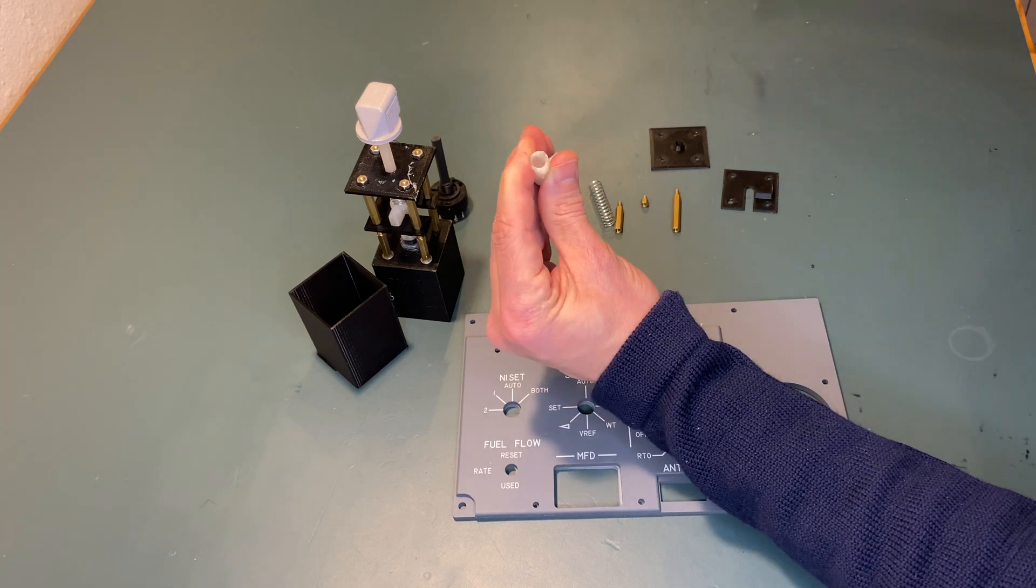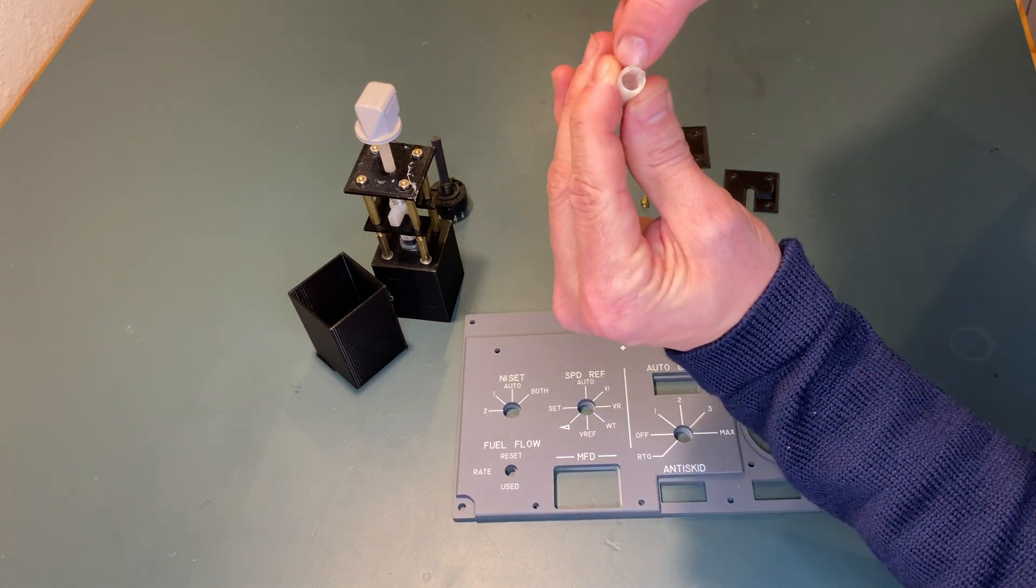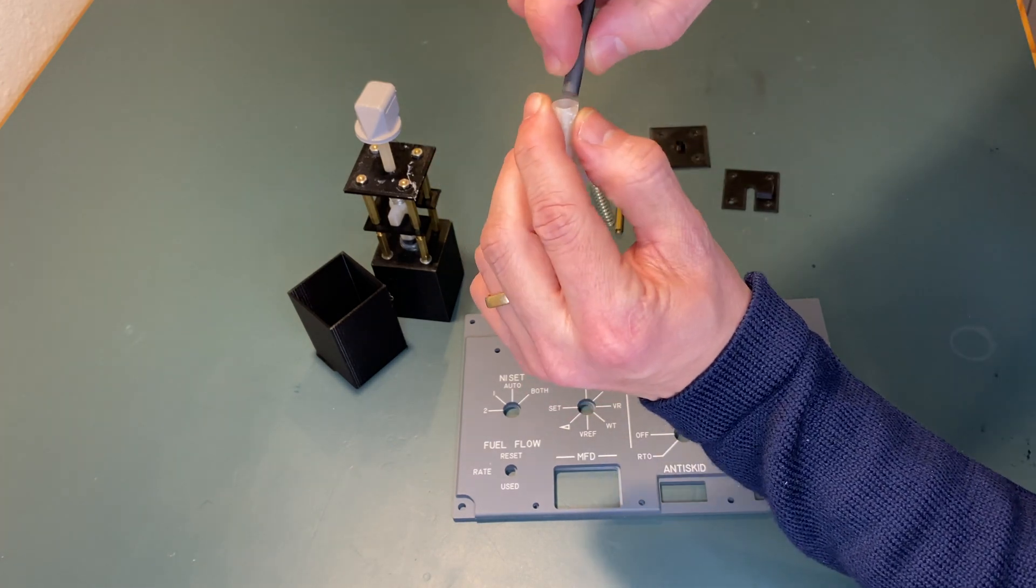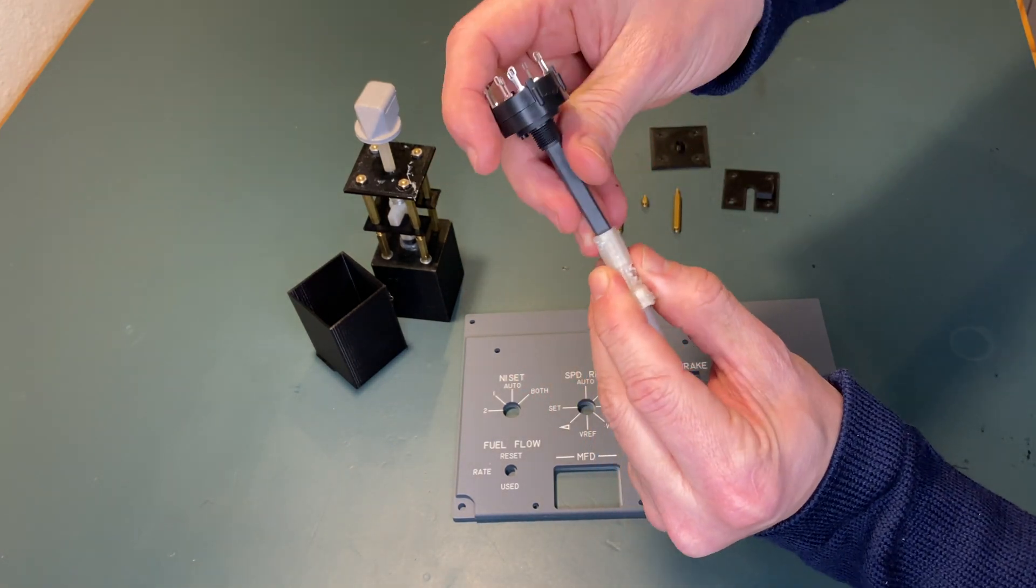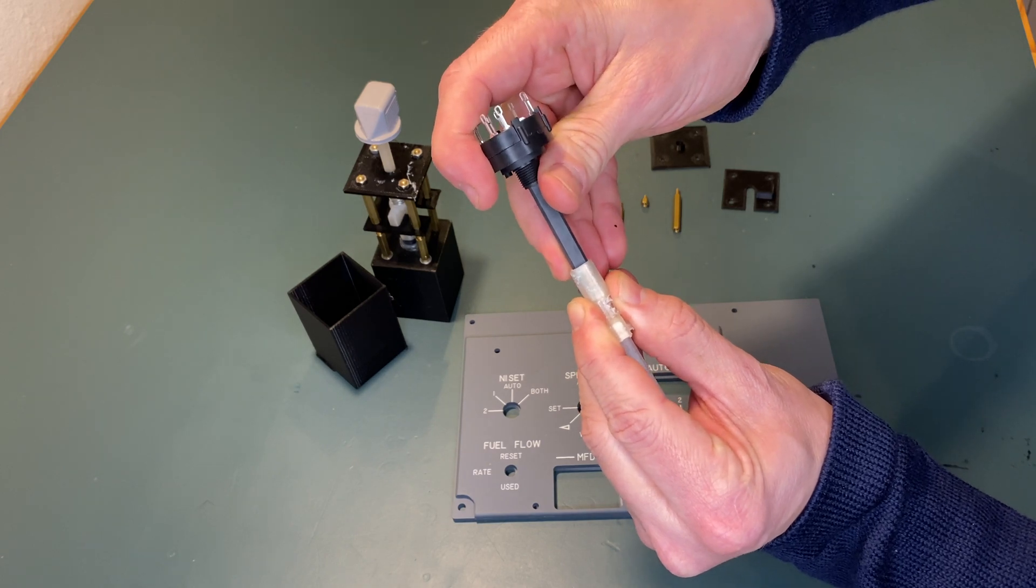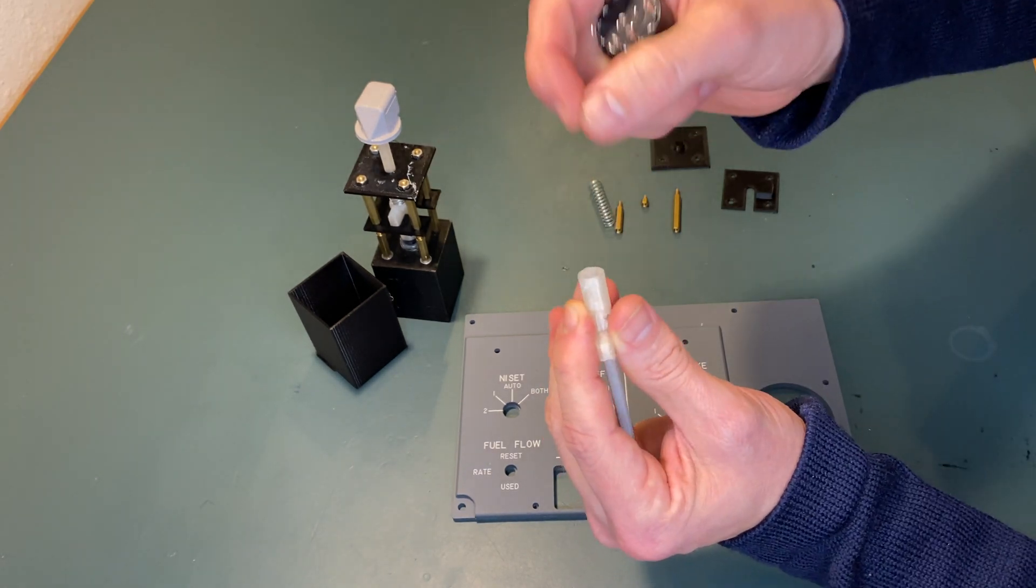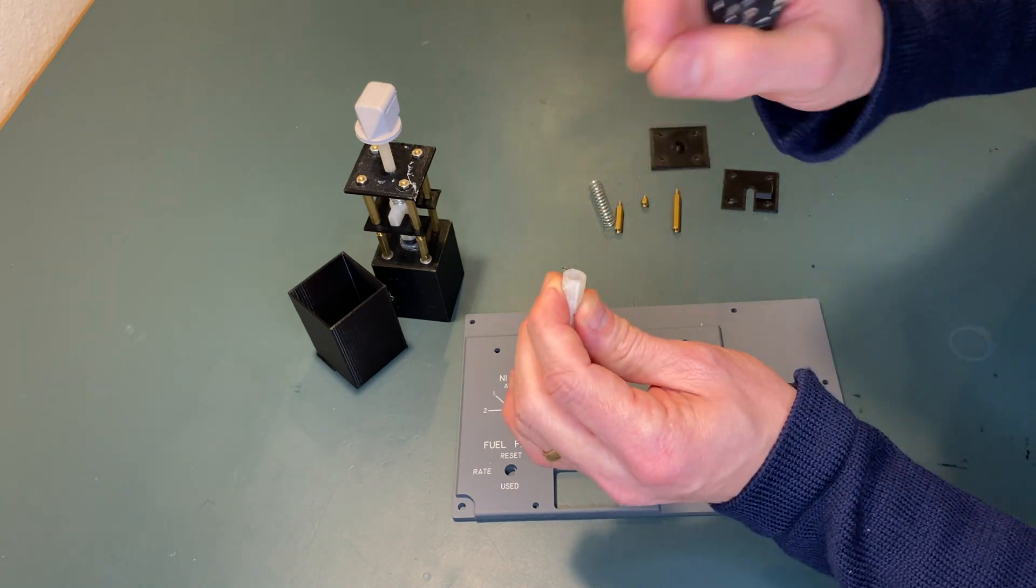That's why you want to print it upside down, because afterwards you need to clean this and make sure that you have enough space so that the shaft can move freely up and down but not to the sides. You need to clean it a bit—use perhaps a file, a nail file, something like that, or a screwdriver.